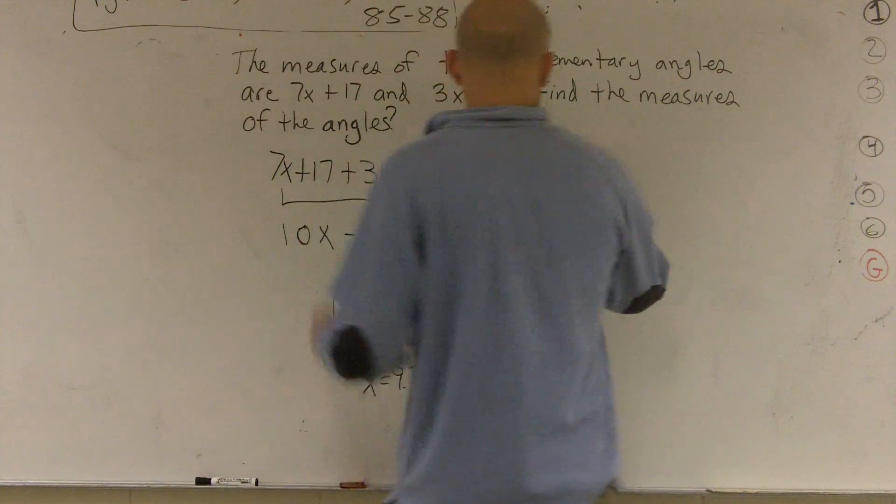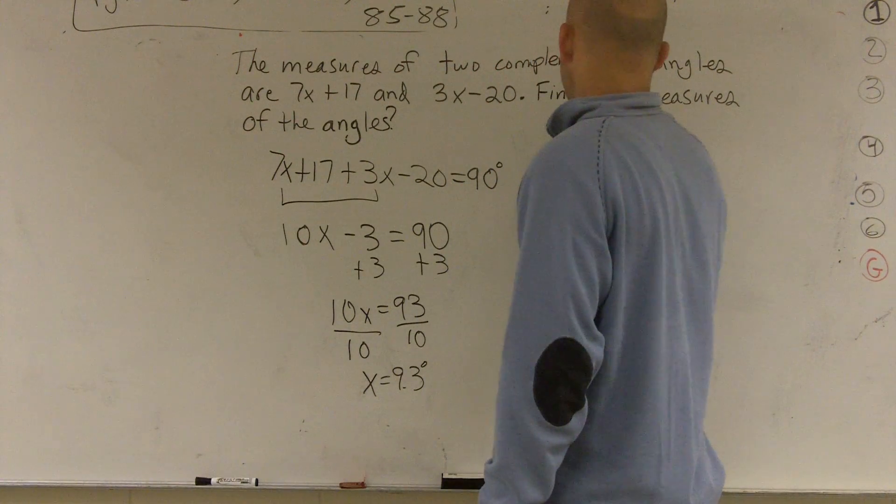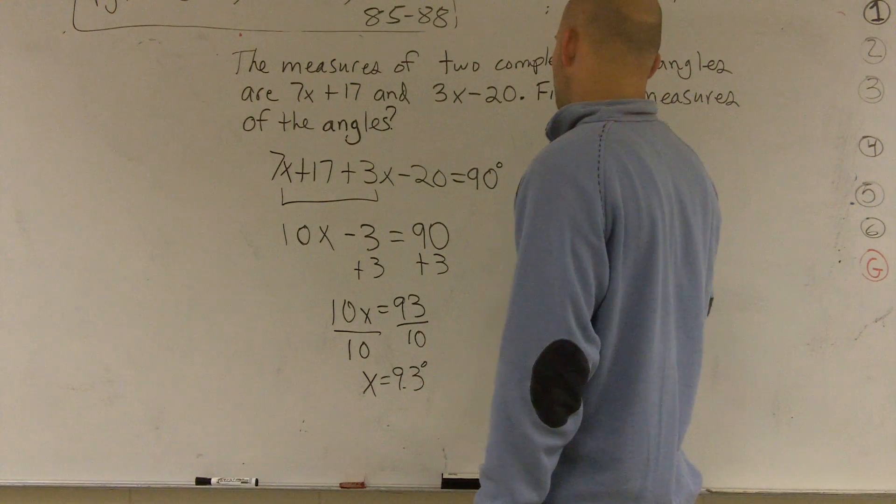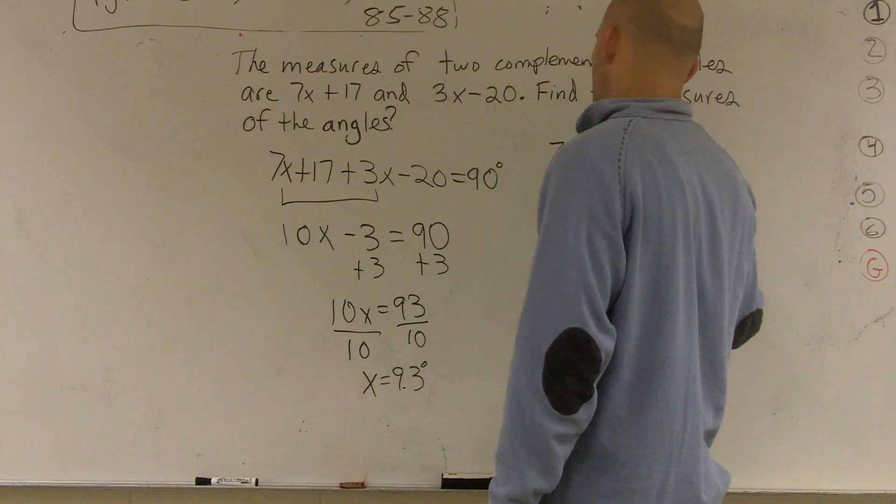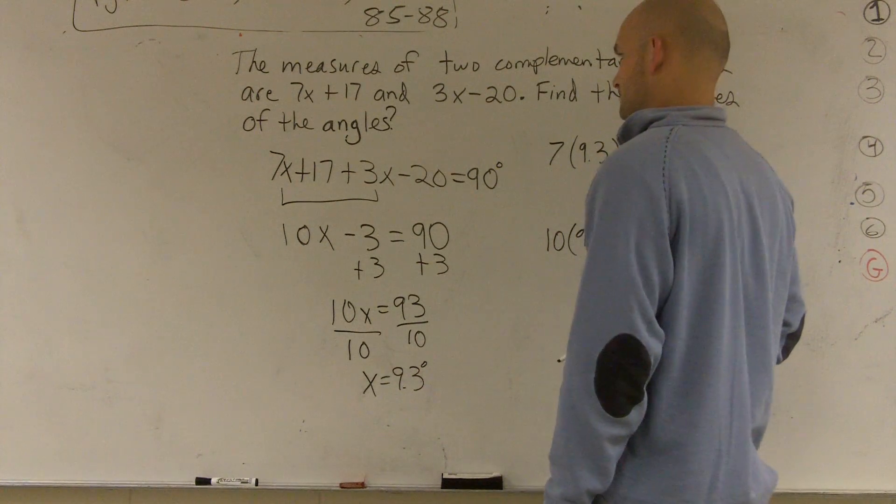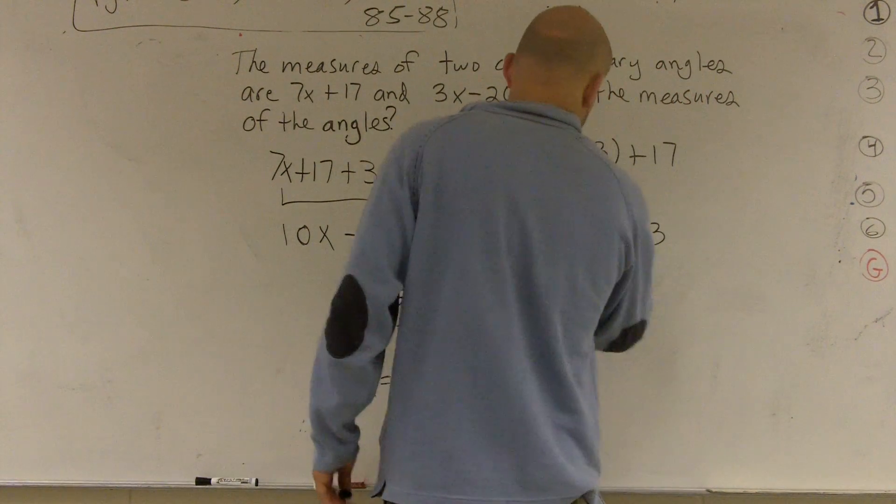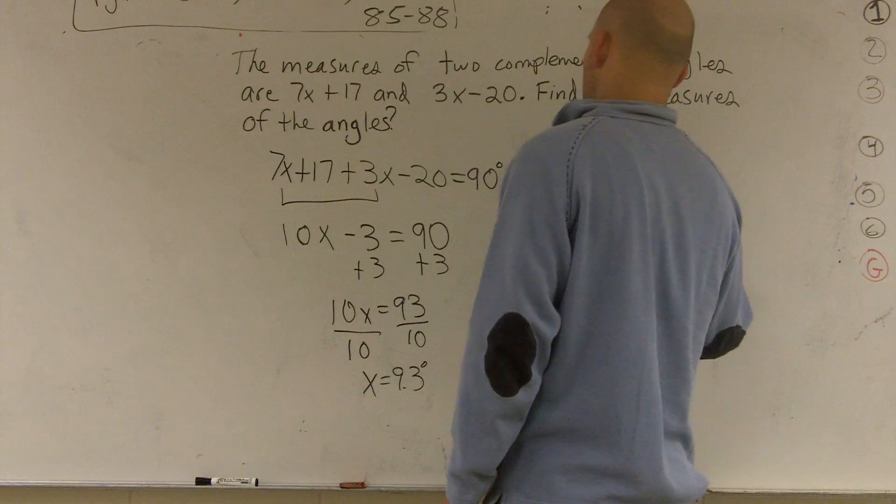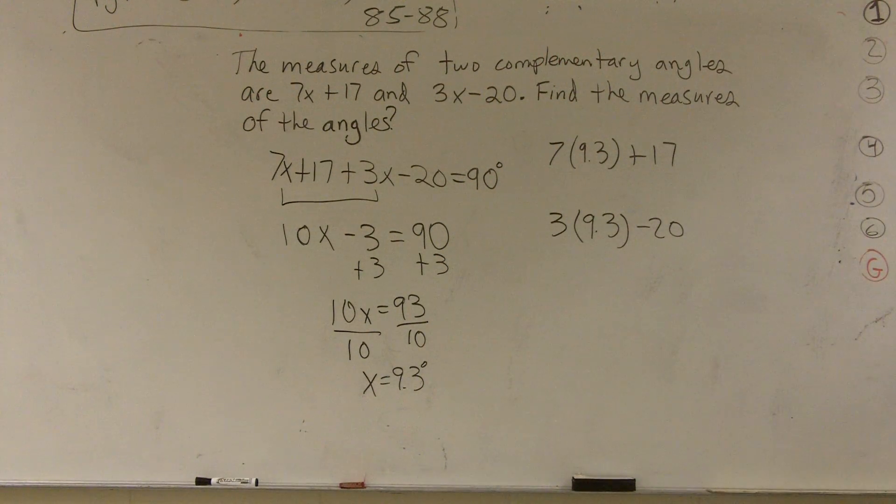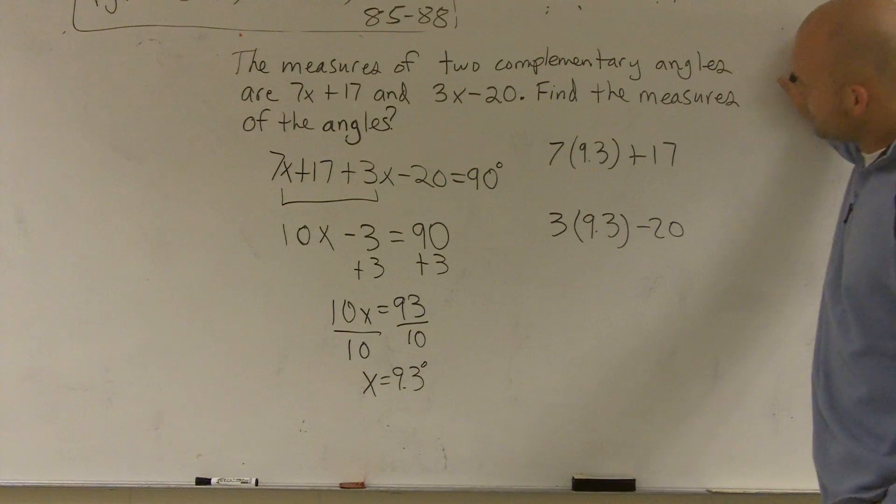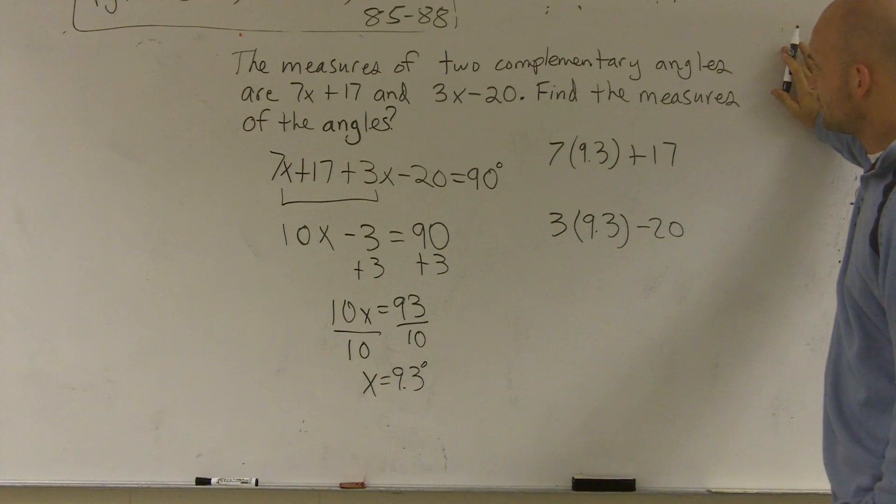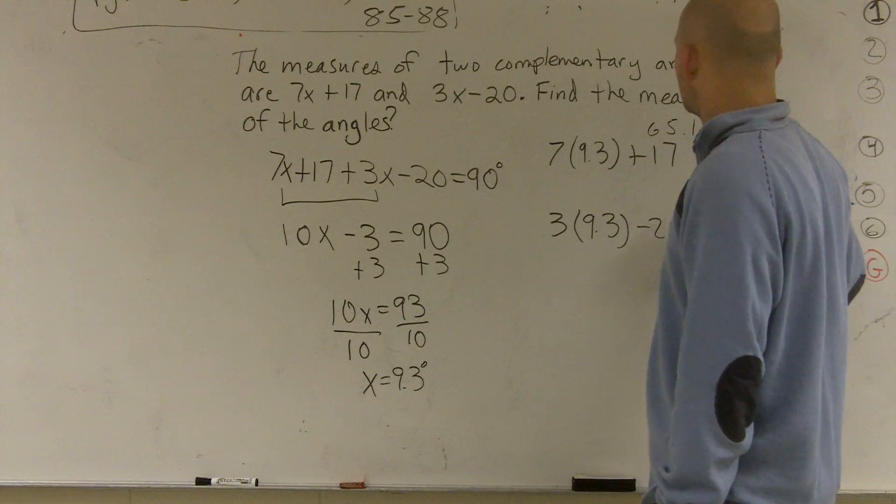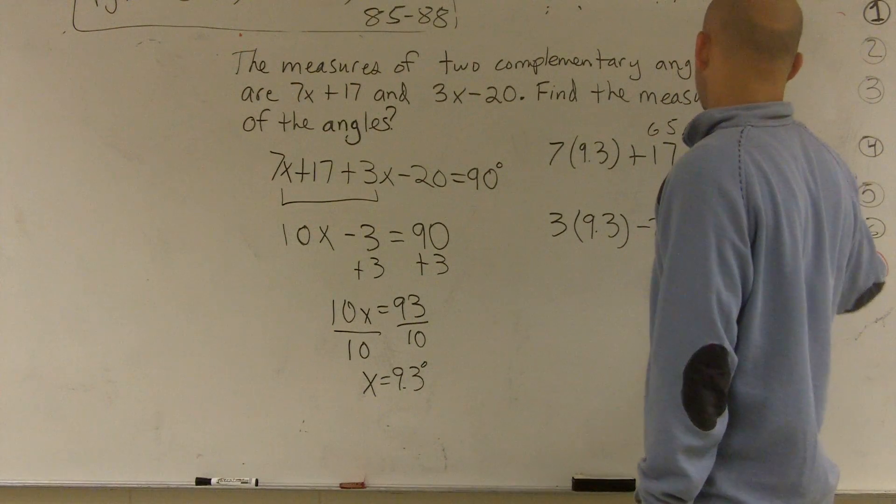So I can say my first angle would be 7 times 9.3 plus 17. And my other angle is 10 times 9.3 minus 3. No, it's 3x. Sorry. 3 times 9.3 minus 20. So 7 times 9.3, that's going to be 63, that would be 65.1. So that would give me equals 82.1.